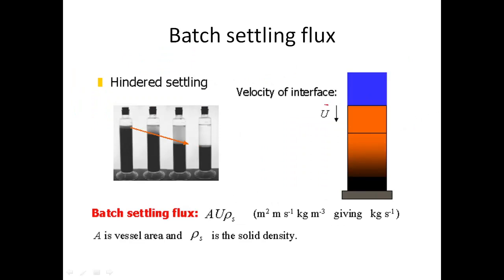The settling velocity U is a function of concentration C. The higher the concentration, the slower U will be, with the ultimate limit being maximum solids concentration where there is no settling. The fastest settling velocity occurs in free settling — not hindered settling. So the hindered settling velocity will be somewhere between the Stokes settling velocity and zero, depending on the concentration of solids.